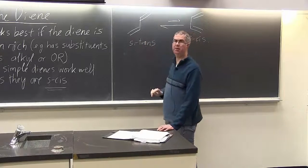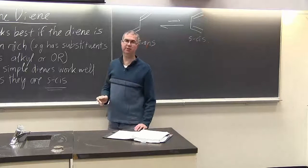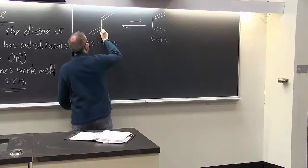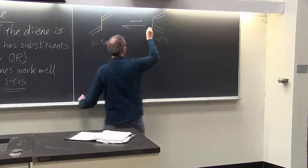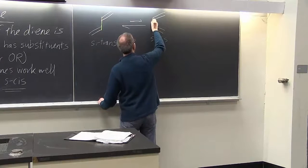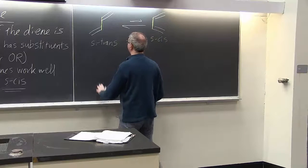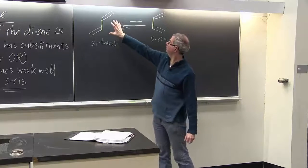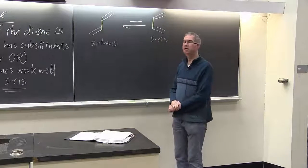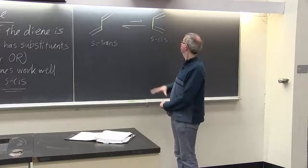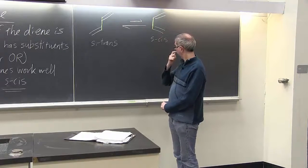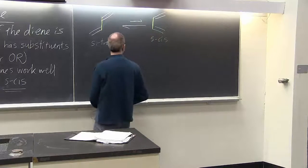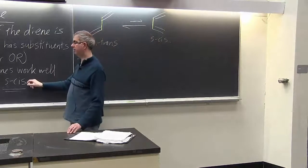Notice the double bonds are not cis or trans. They're only mono-substituted. So what we're looking at here is how this single bond has the double bonds oriented around it. So in this case, the two double bonds are on opposite sides. So that's called S-trans. Here they're on the same side. And so they're called S-cis. And to react, they have to be S-cis.